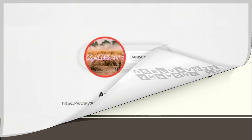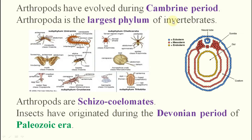Arthropods have evolved during the Cambrian period — very important, remember that for the exam. Arthropod is the largest phylum of invertebrates; this question may come in the exam. Among all phyla, arthropod is the largest one — that is a very important point to remember.